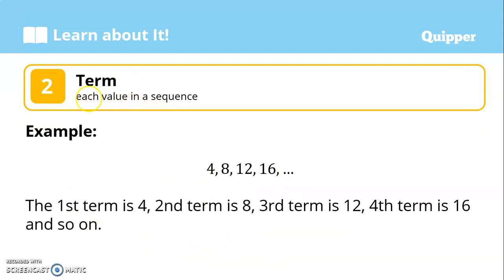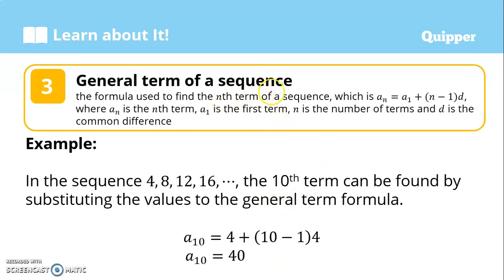Each value in a sequence is called a term — the first term, second term, third term, and so on. We also have what we call the general term of a sequence, also known as the nth term or general formula. For an arithmetic sequence, this formula must be memorized: a sub n equals a sub 1 plus n minus 1 times d. Where a sub n is the nth term, a sub 1 is the first term, n is the number of terms, and d is the common difference.